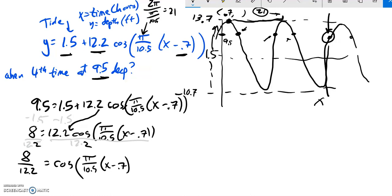So now I've got this 8 over 12.2 equals cosine pi over 10.5 times x minus 0.7. So what I should be able to do is go inverse cosine of this 8 over 12.2, and whatever that is will be equal to that value.